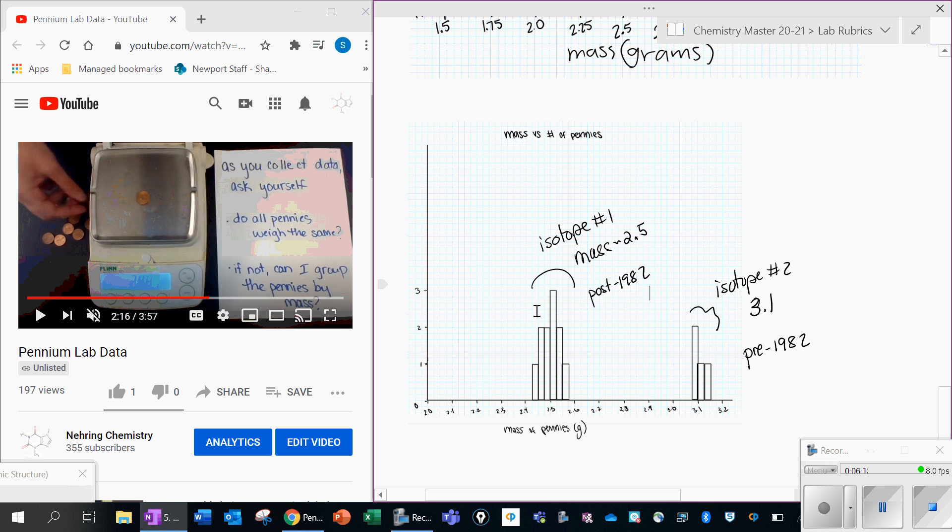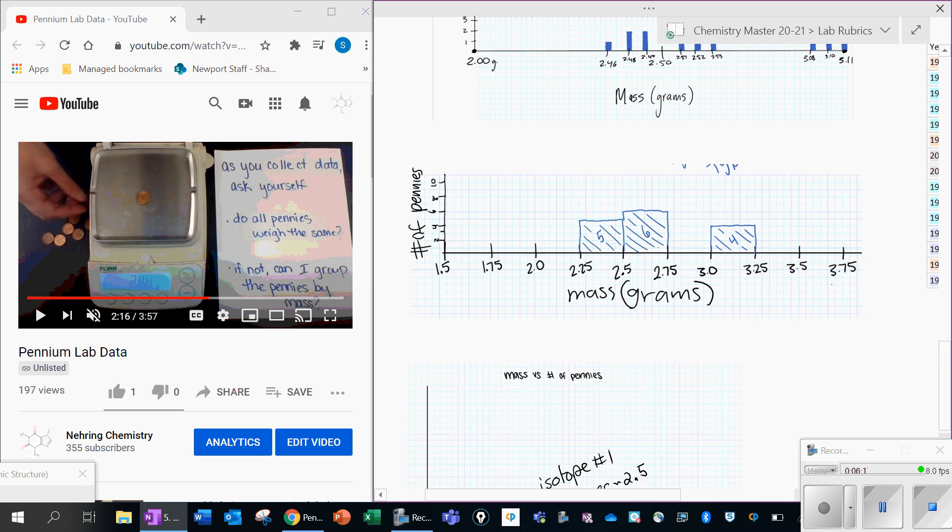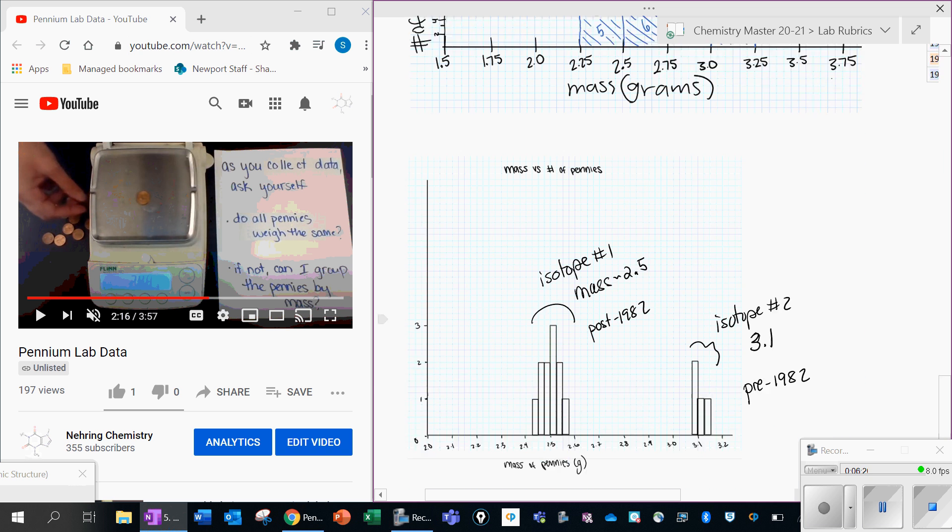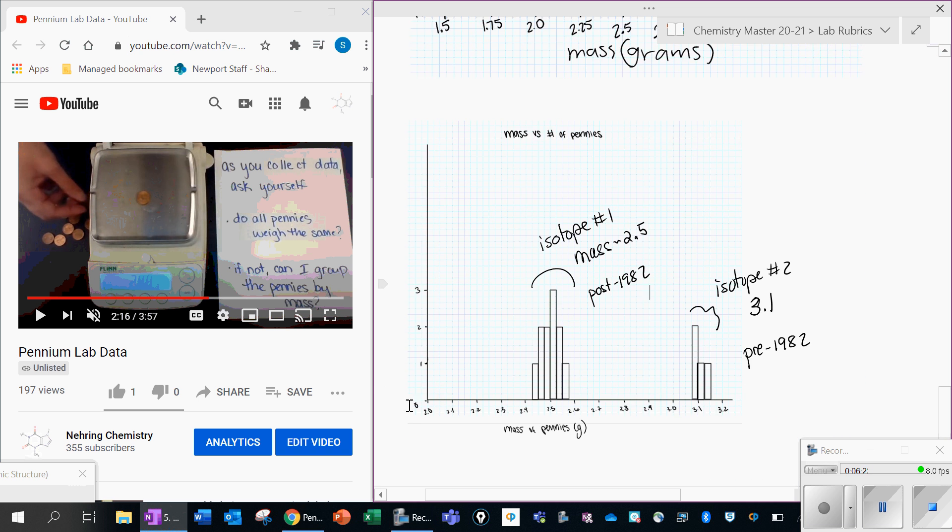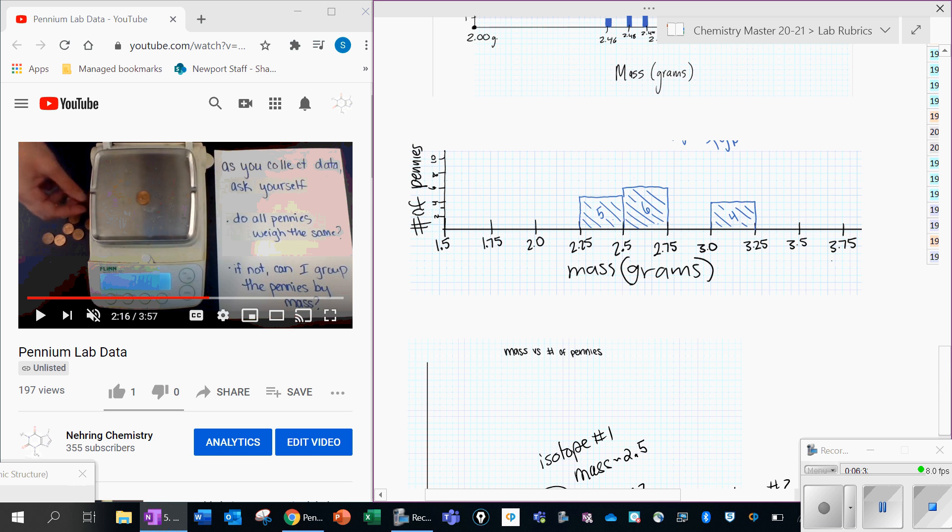So anyways, there's some feedback on the graph and what this graph should look like. Again, it's a bar graph. Your mass is your x-axis. Your number of pennies is your y-axis. I think I cut off the label here. Number of pennies. Make sure you label everything clearly. And then always come by after the tutorial if you have more questions.